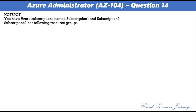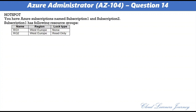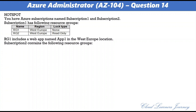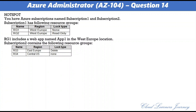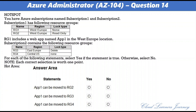Question 14. You have Azure subscriptions Subscription1 and Subscription2. Subscription1 has resource groups RG1 (West Europe, lock type None) and RG2 (West Europe, lock type ReadOnly). RG1 includes a web app named App1 in West Europe. Subscription2 has RG3 (East Europe, lock type Delete) and RG4 (Central US, lock type None). For each statement — App1 can be moved to RG2, RG3, and RG4 — the answer is Yes for all. Locks are designed for update or removal operations; since we are only moving (not deleting or modifying the resource), all moves are permitted.